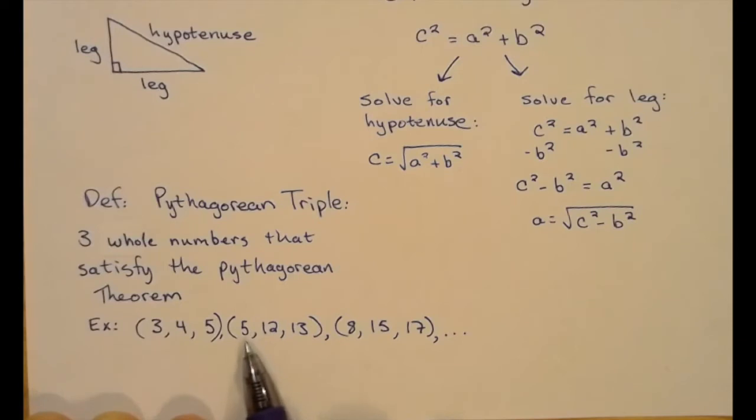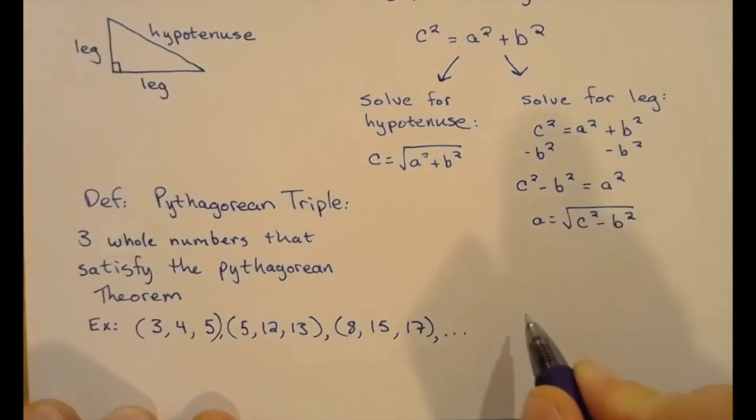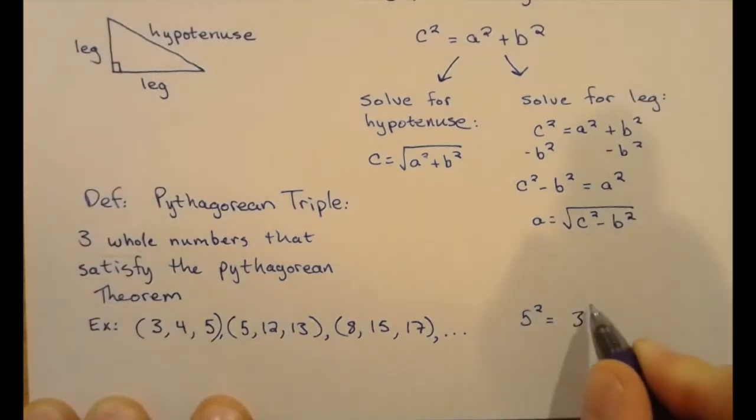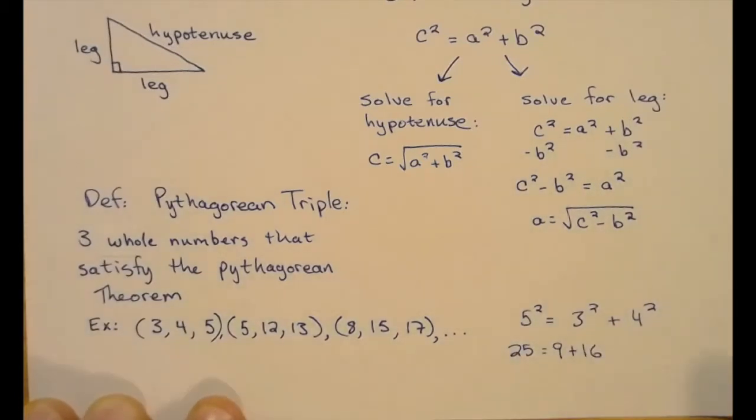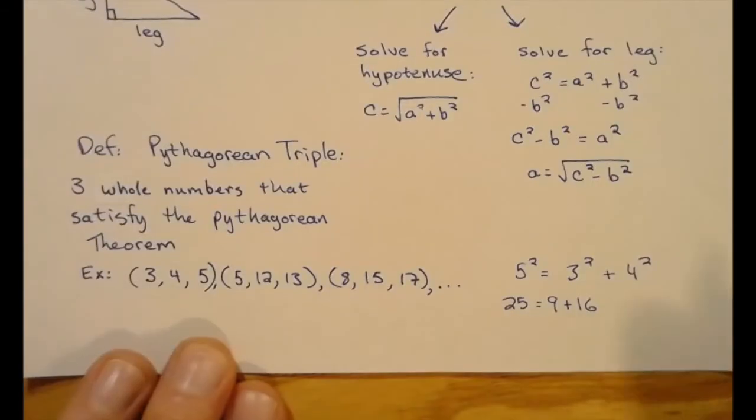3, 4, 5; 5, 12, 13; 8, 15, 17. Just, for example, looking at the 3, 4, 5, the hypotenuse obviously is going to be the largest side in a right triangle. So the 5 is the hypotenuse and 3 and 4 are the legs. So 25 = 9 + 16. And that, of course, is true. So there are three whole numbers, 3, 4, and 5, that satisfy the Pythagorean theorem. Three whole numbers, that is. Those are called Pythagorean triples.